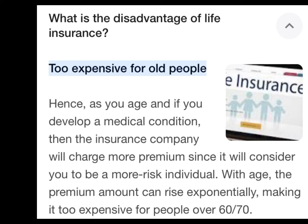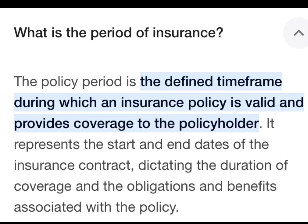What is the disadvantage of life insurance? The main disadvantage is that it is too expensive for older people. As you age, or if you have a medical condition, the insurance company will charge more in premiums, since they consider you to be a higher risk individual.